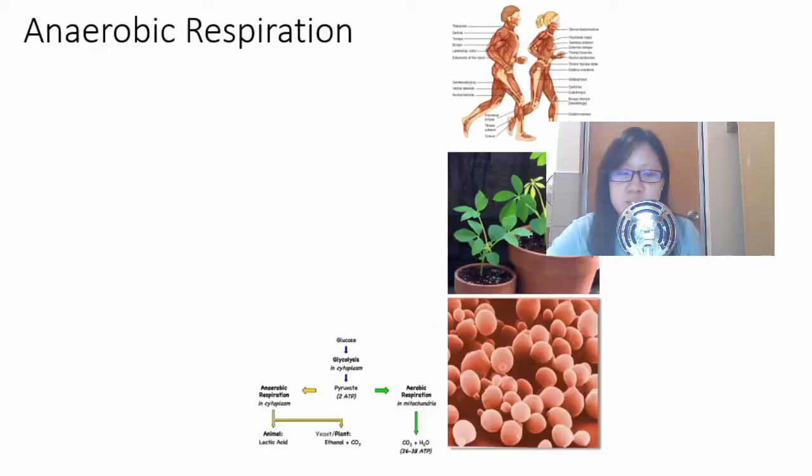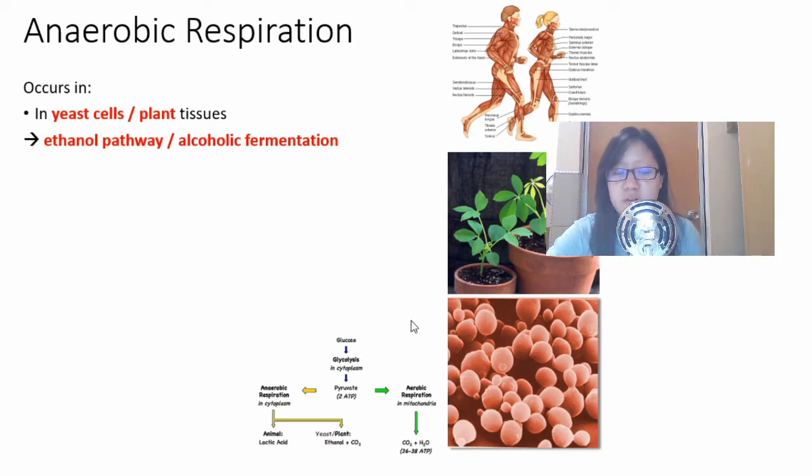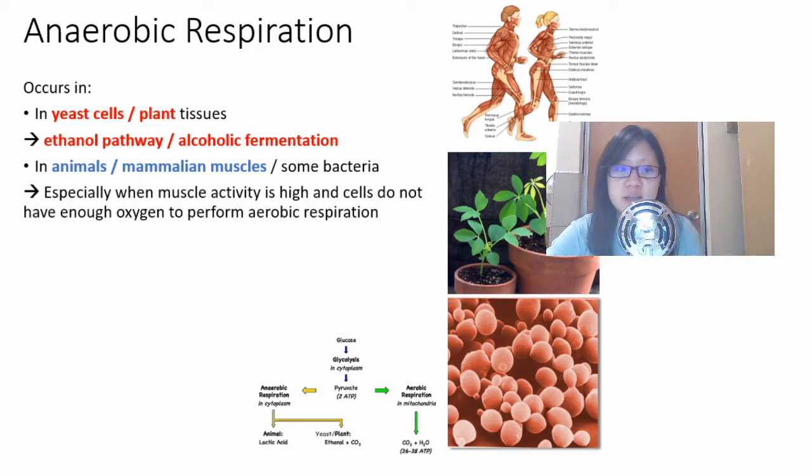What are these special pathways? There are two of them occurring in different places. The first one is in yeast cells or plant tissues. This pathway is called ethanol pathway or alcoholic fermentation. It's this pathway in yeast that helps us produce beer. The second one is in animals, in mammalian muscles. This pathway is called lactate pathway or lactic fermentation, sometimes called lactic acid pathway as well. This especially occurs when muscle activity is high and cells do not have oxygen to perform aerobic respiration, probably when you are exercising.